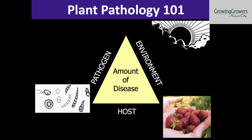You have to have a susceptible host in order to see any level of disease. If your biggest problem is late blight of tomatoes, the easiest way to get rid of that disease is don't grow tomatoes. Disease doesn't occur without a susceptible host. The third side of what we call the plant disease triangle is environment. All pathogens require a suitable environment in order to grow, colonize the plant, and cause the expression of symptoms. We can tug on these different strings — affect the environment, the host, and the pathogen — in order to minimize disease.